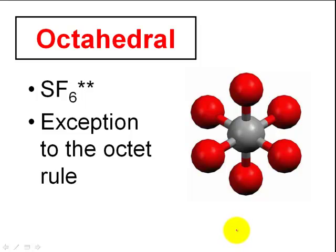An exception to the octet rule is the octahedral shape. We're not really going to look at this right now, but there are other shapes you can study — we'll bypass this one for the time being.